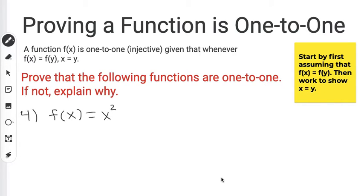So in this video, we're proving that functions are one-to-one. A function f(x) by definition is going to be one-to-one given that whenever f(x) equals f(y), then x equals y.